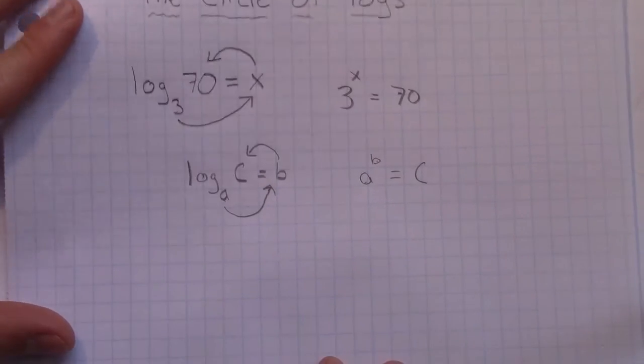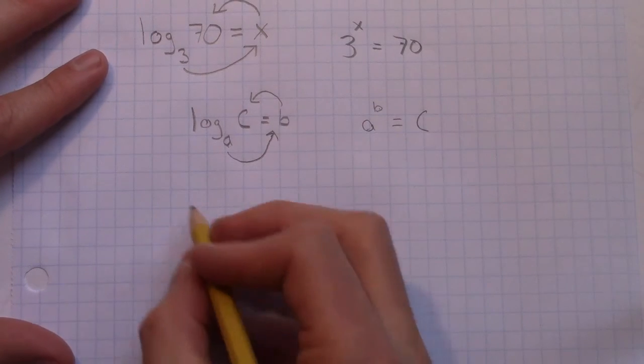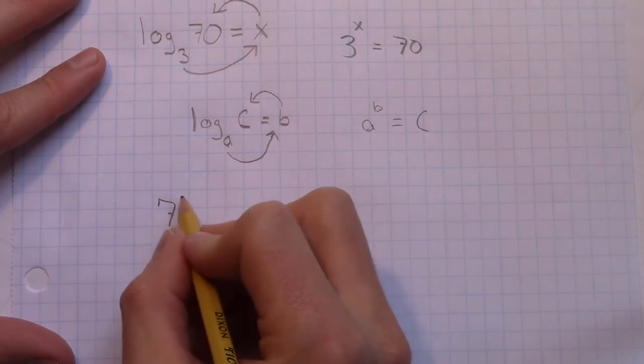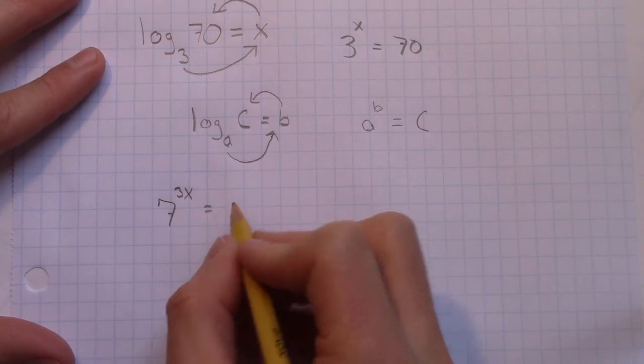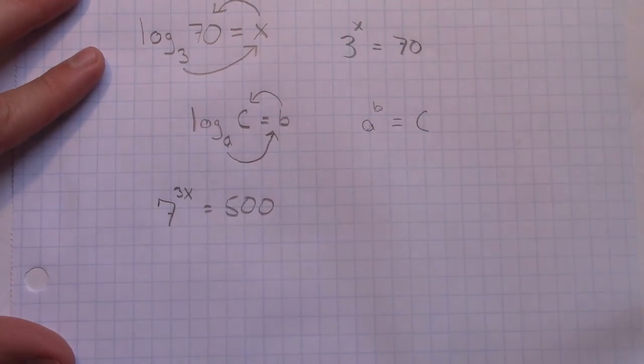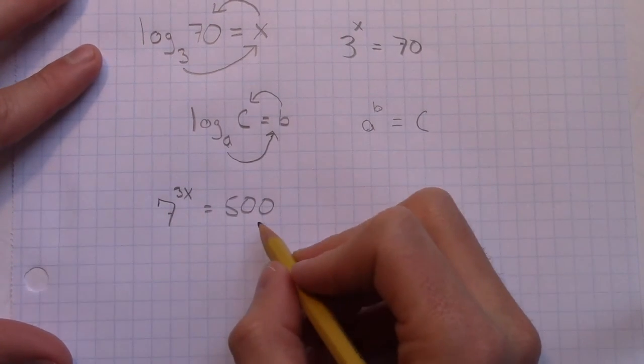And you can go the other way with it. So if you had another example, let's say you just had, I don't know, 7 to the power of 3x equals, I don't know, 500. If the problem says convert this into a logarithm, well, what would you do?